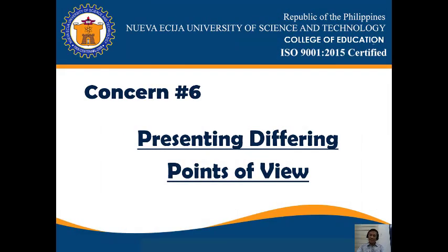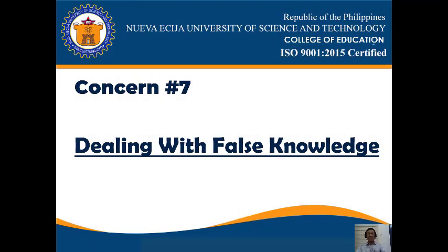Concern number six: presenting differing points of view. Social studies texts are written by humans and therefore are biased — we have to remember that. For example, two American government texts a school district is considering might have very different political leanings. Whichever text the district adopts, a good social studies teacher will need to work to present alternative points of view. History texts might describe the same event in a different way based on who wrote them, which will be a challenge for teachers to deal with.